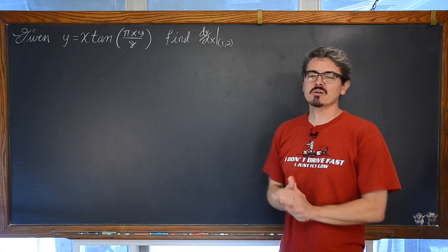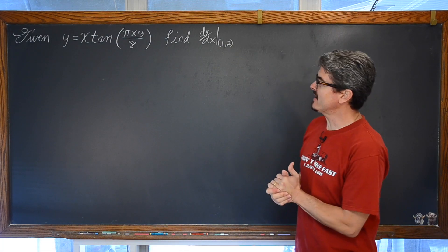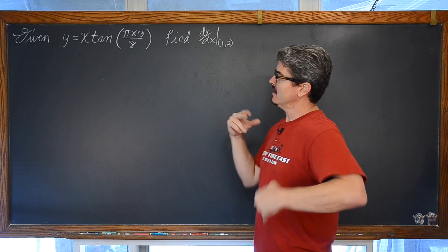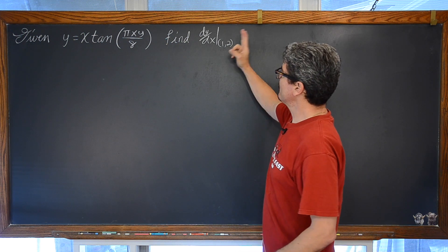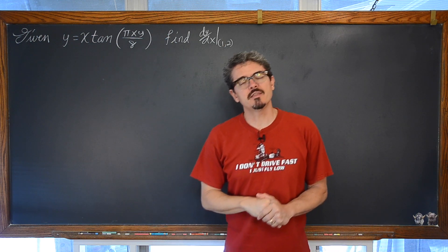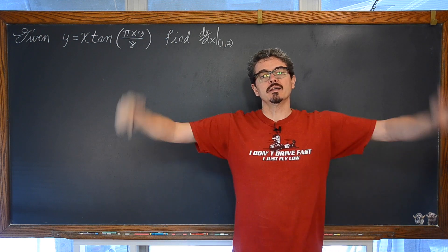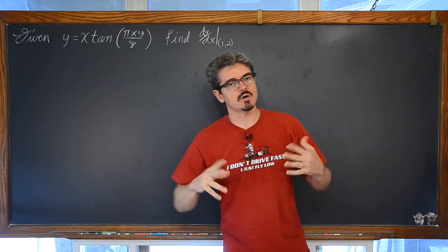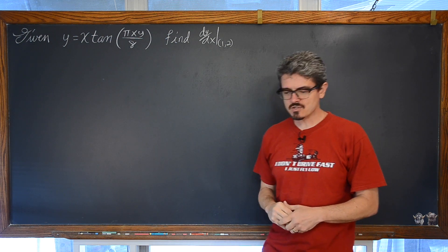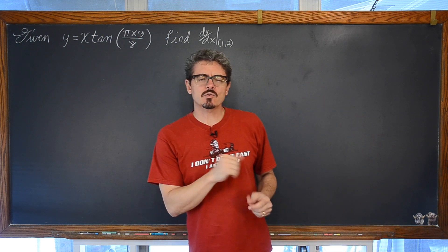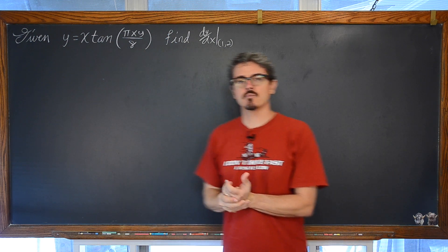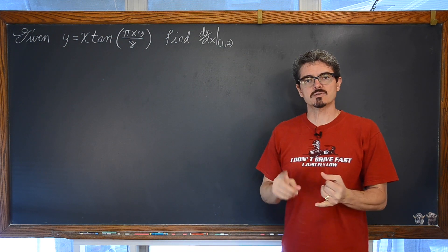In this example lesson we are going to be taking a look at a problem that involves implicit differentiation using the product rule a couple of times, finding the derivative at a point, and then finding the equation of the normal line. In the description you will find a link to other lessons I have done involving implicit differentiation. This question is inspired by, but not exactly like, a previous IB exam question that was worth seven points.